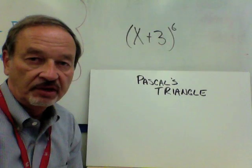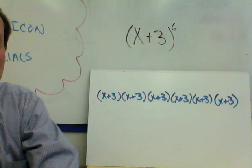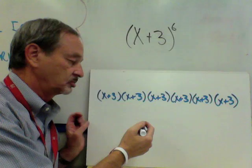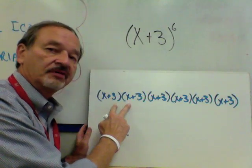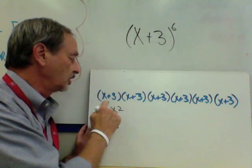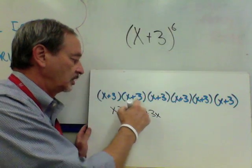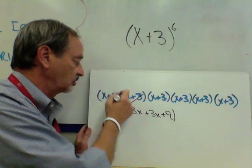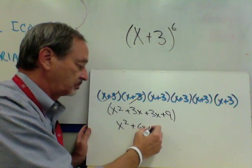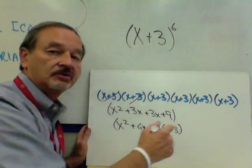Now without Pascal's Triangle, the way we would have to do that is we would have to take x plus 3 and write it six times. Then we would use the distributive law successive times to do the multiplication. Let's multiply the first two factors: x times x is x squared, x times 3 is plus 3x, 3 times x is plus 3x, and 3 times 3 is 9. We would simplify and combine the two 3x's into 6x plus 9, and then bring down the next factor of x plus 3 and do it all over again.